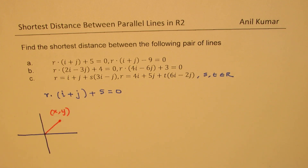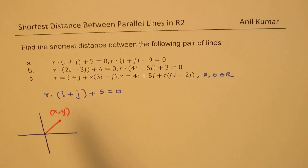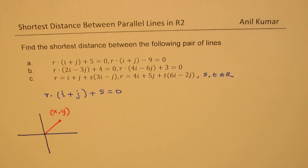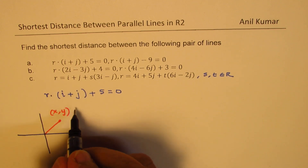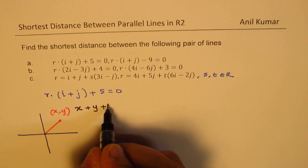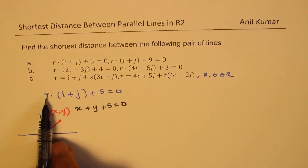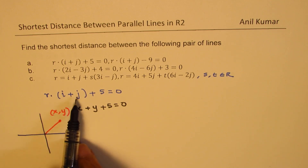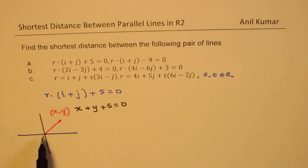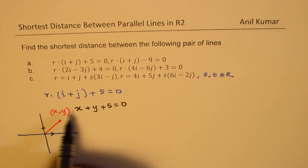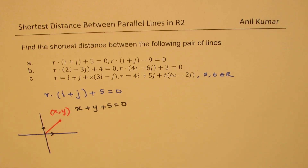If you do the dot product of r, which is (x, y), with (i plus j), this equation can be written as x plus y plus 5 equals 0. The i component gives x and the j component gives y, so the dot product gives x plus y plus 5 equals 0.